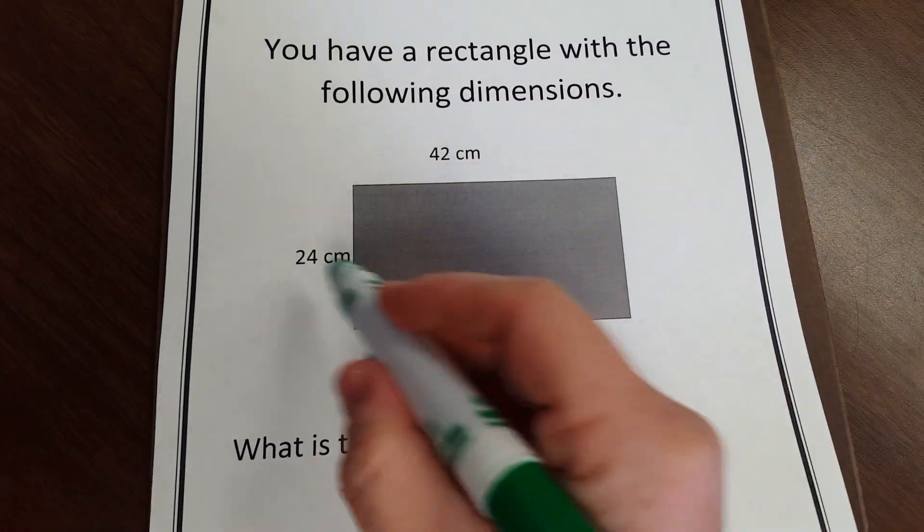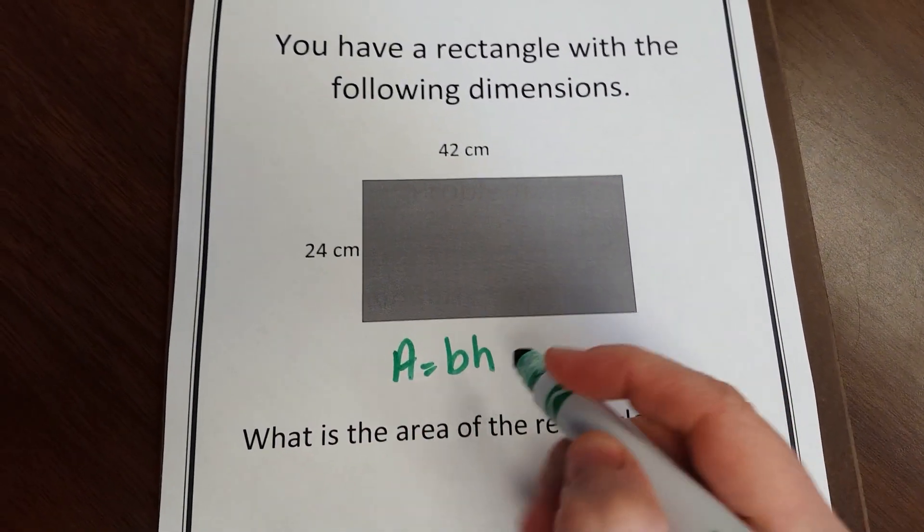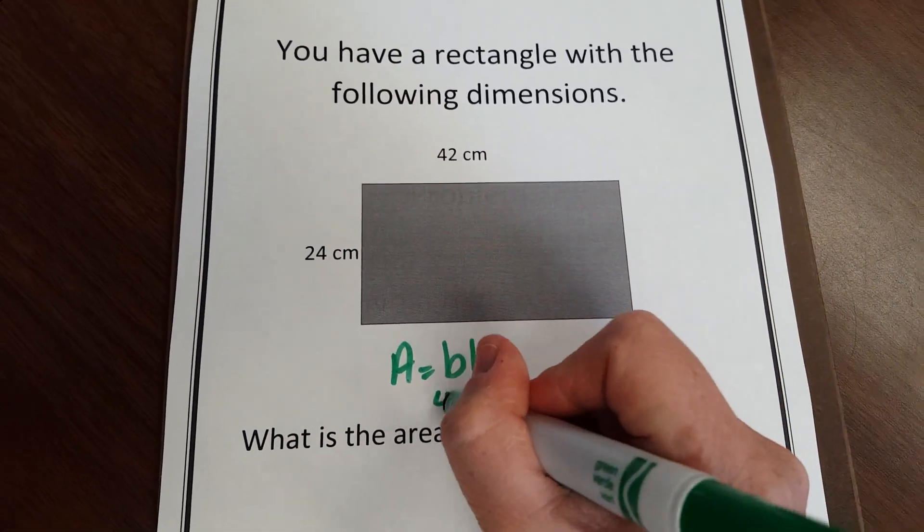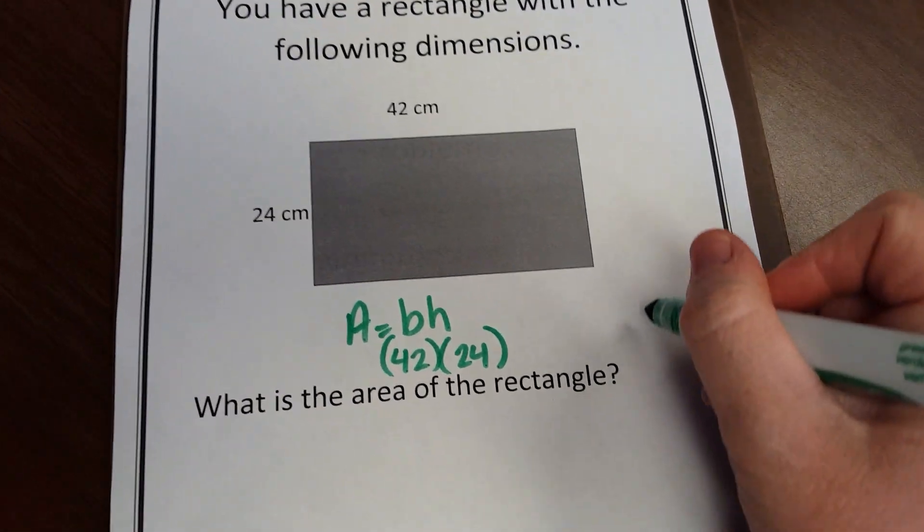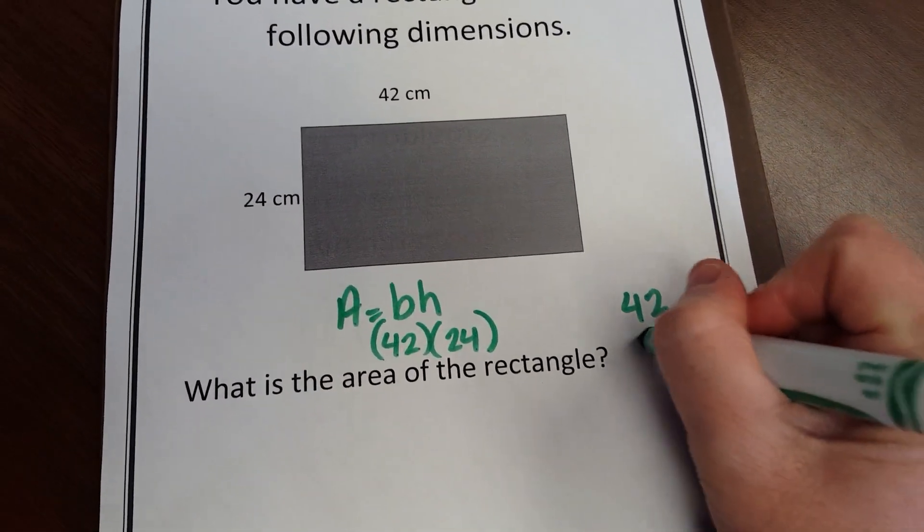Okay, so I like to label these and put my numbers right in there. So my base here would be the 42, and my height would be 24. I'm just going to multiply those out. So, 42 and 24.